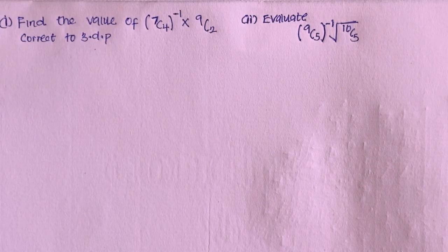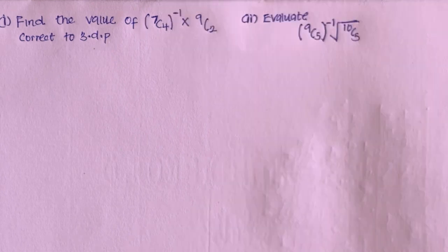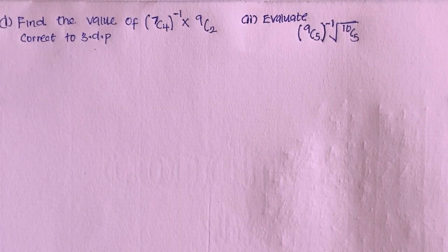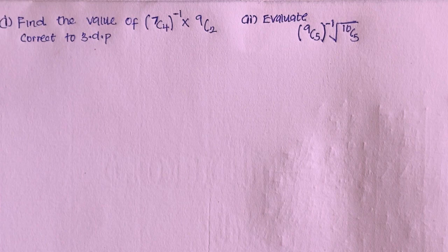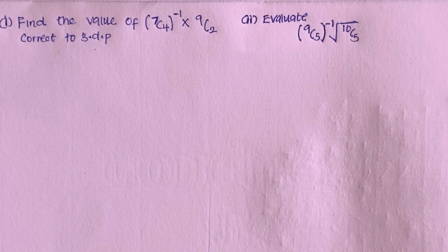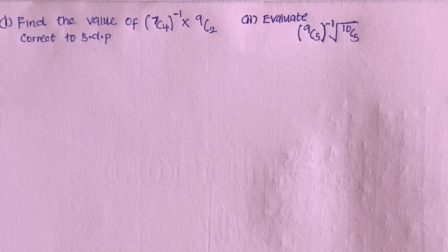Hi friends, in this video I'm asked to solve two questions. The first one, I'm asked to find the value of 7 combination 4 inverse multiplied by 9 combination 2. The second one, I'm asked to evaluate 9 combination 5 inverse, then multiply by the square root of 10 combination 5. Let me go ahead and solve these questions.